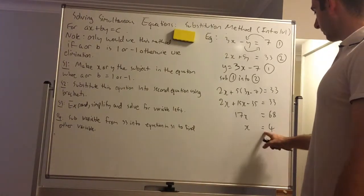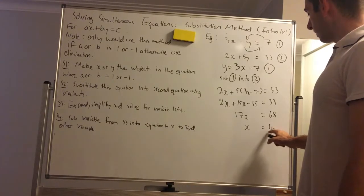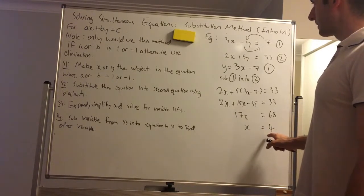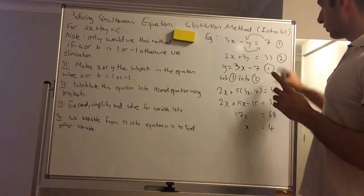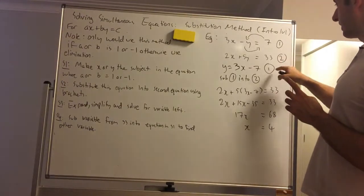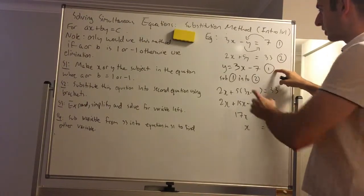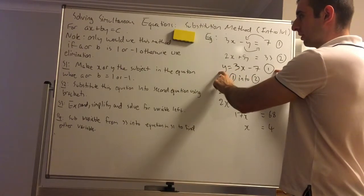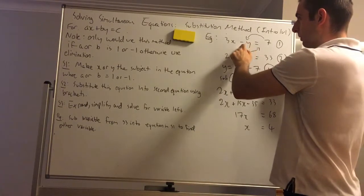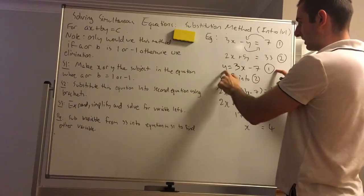So last thing we've got to do, step 4, is once we have the one variable, we're going to substitute it, not into one of these, but into this equation right here. Because I already have y as the subject. If I sub it into here, I've already done some work to solve for y, but y is already the subject.